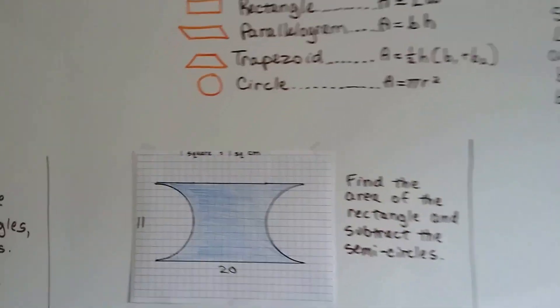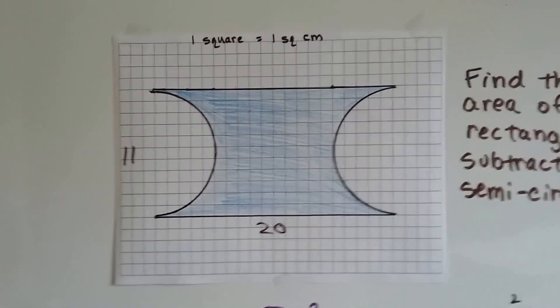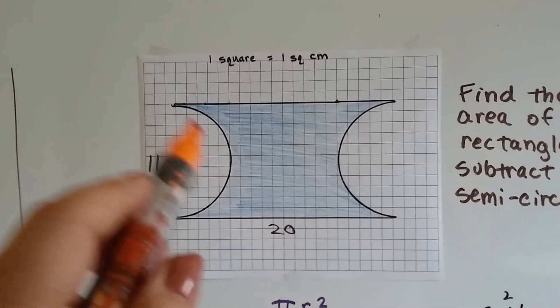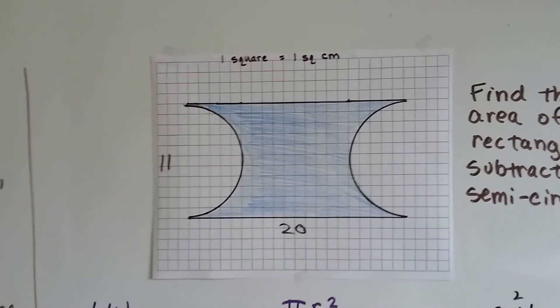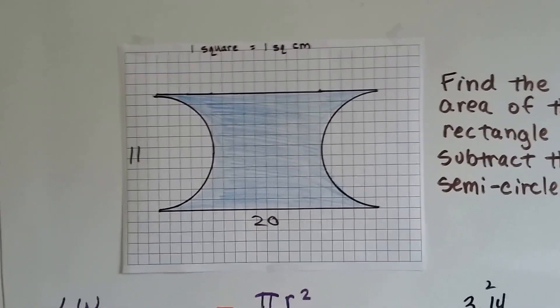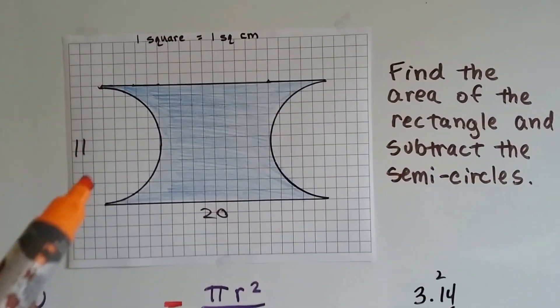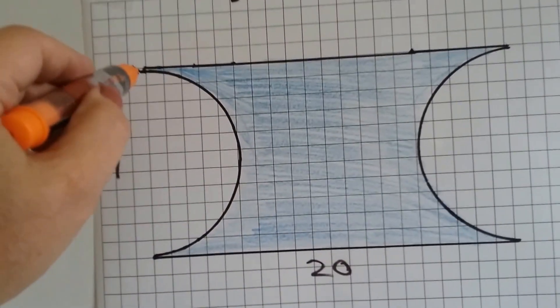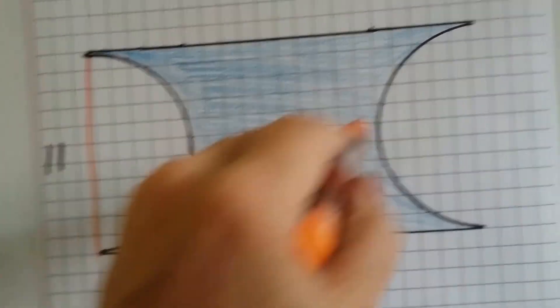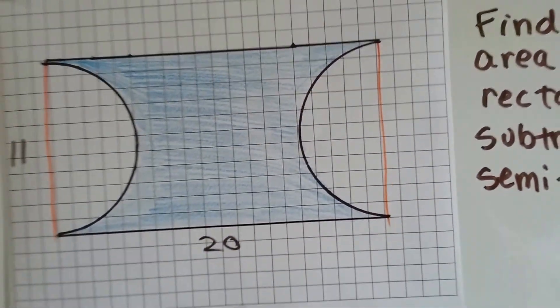Here's our first odd composite figure. Look at this. It's got semicircles missing from it. What we can do to solve this, to find its area, is we're going to find the area of the entire rectangle and subtract the semicircles. We're going to pretend like this is one big rectangle.